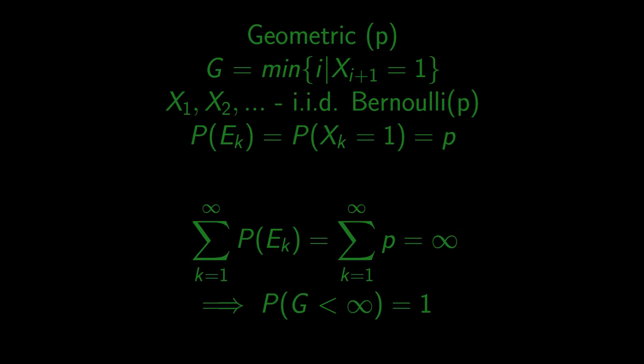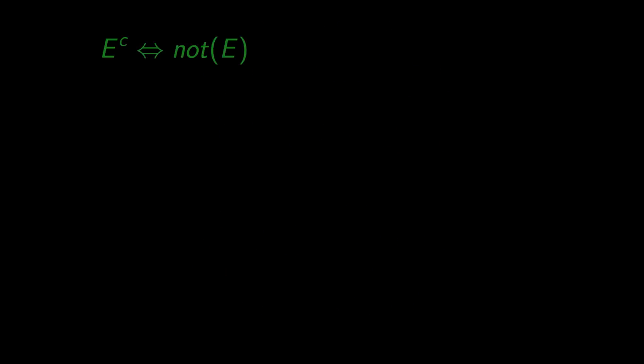Let's quickly recap what we used to prove the second part of the lemma. First of all, we used complementary events, so the one that happens if and only if its complementary event does not happen, like success and failure in a Bernoulli trial.